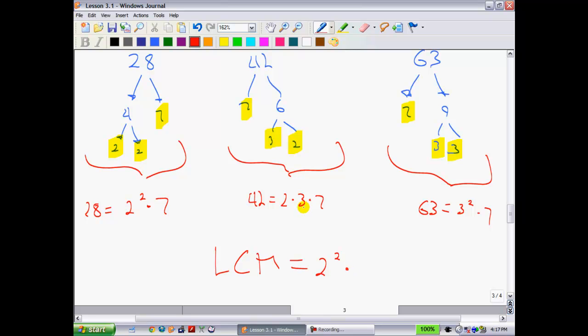Now, the next number I see pop up is a 3. Well, I don't take this 3, I take the 3 squared over here, because it's a higher power. And then now I look at a 7. There's a 7 in all of them, since 7 to the power of 1 is the highest, I'm going to use that.